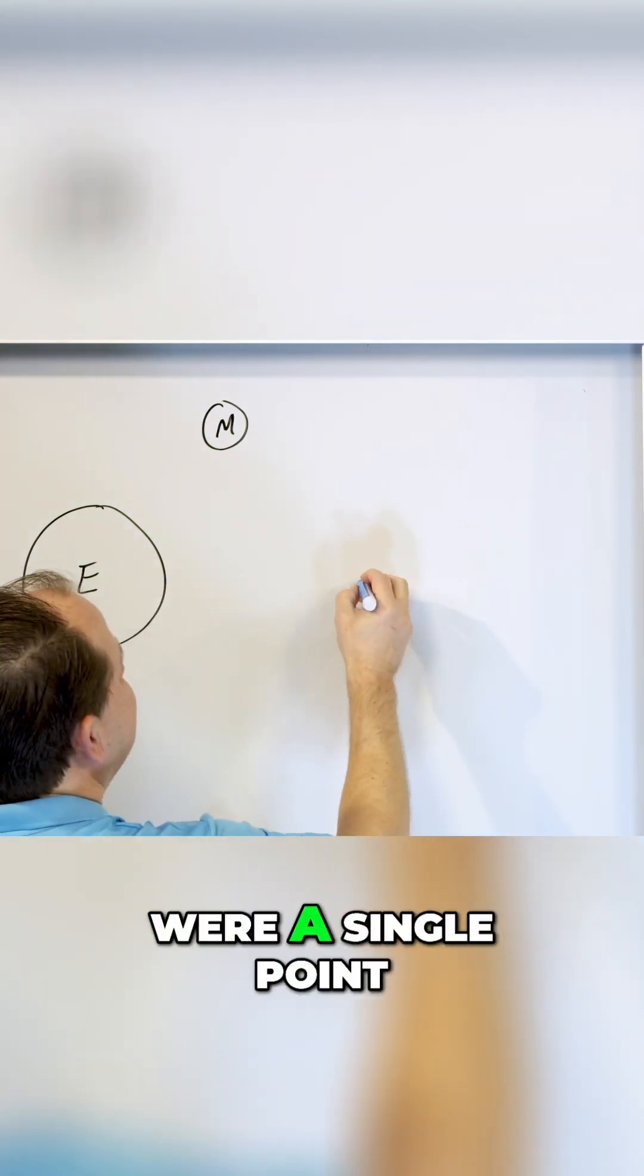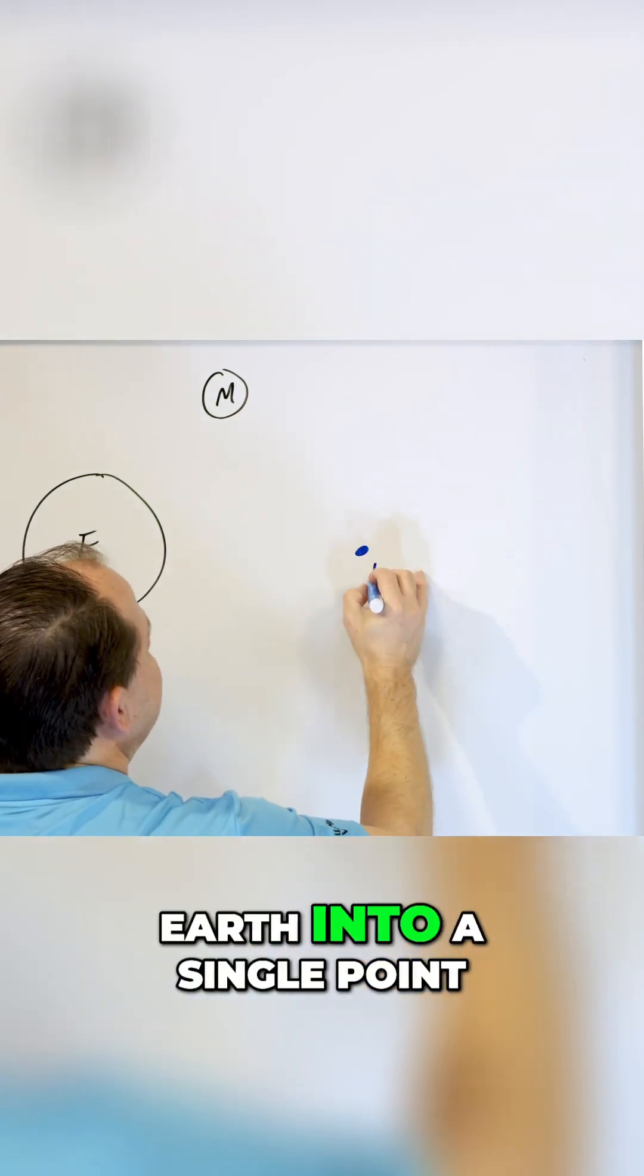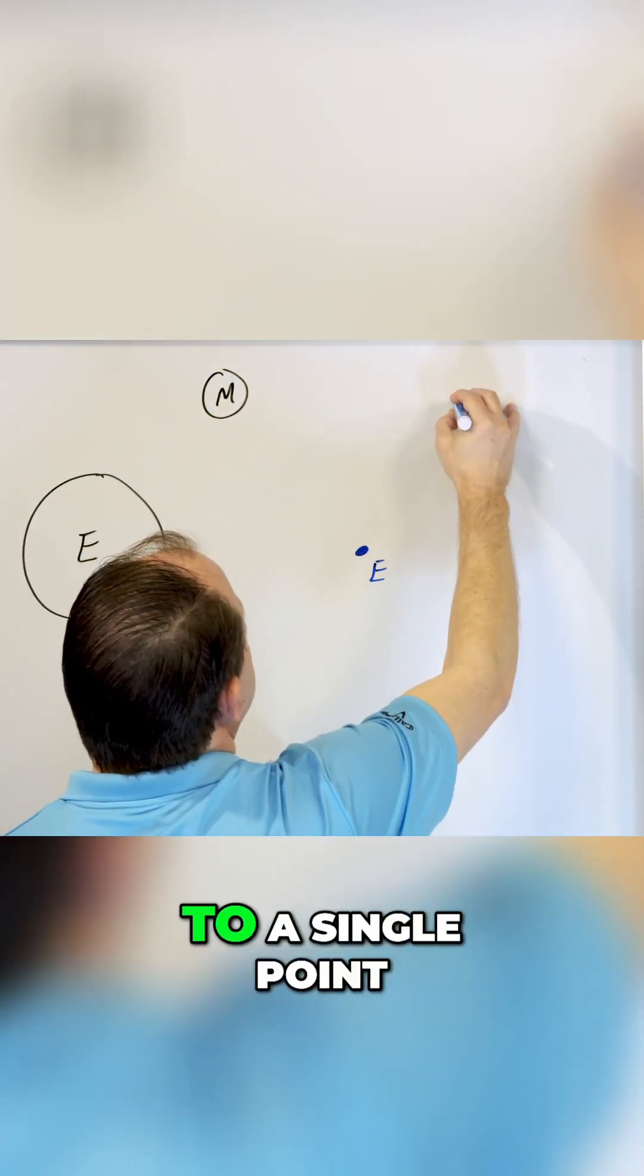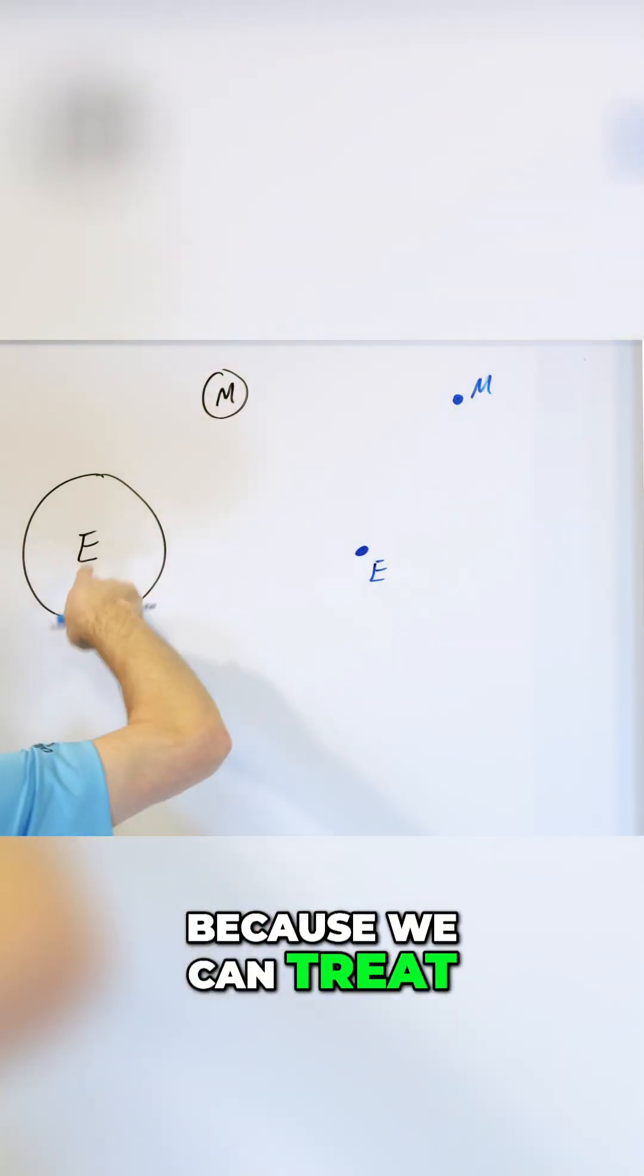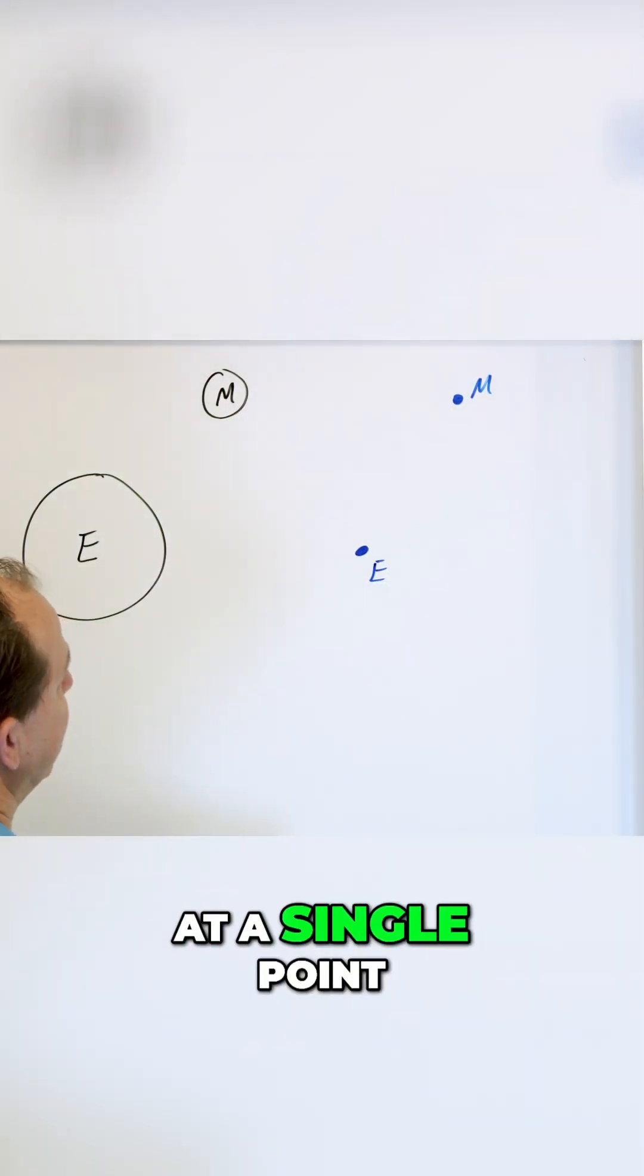Let's talk about the Earth as if it were a single point. So we concentrate the mass of the Earth into a single point, we call it E, and we concentrate the mass of the moon to a single point, we call it M, because we can treat these planets as if their masses are concentrated at a single point.